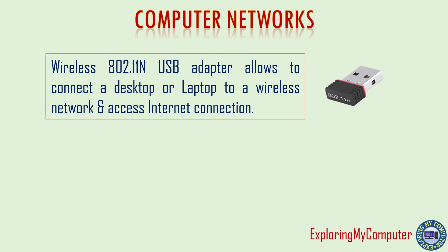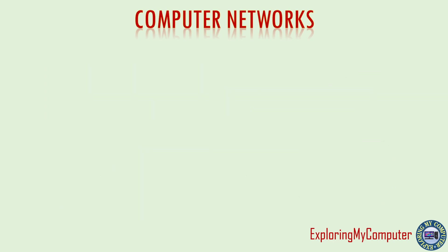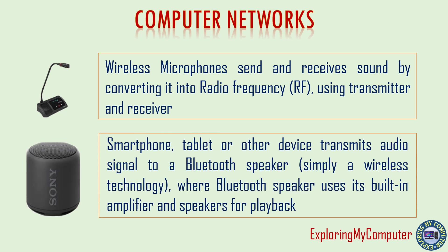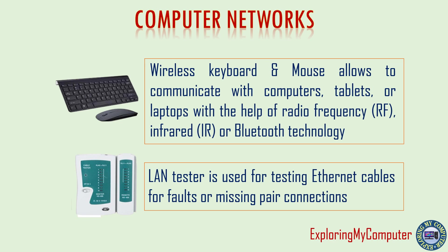Wireless 802.11n USB adapter allows connecting a desktop or laptop to a wireless network to access an internet connection. Wireless data card is a personal hotspot router used to connect up to 10 Wi-Fi-enabled devices such as smartphones, laptops, tablets, and smart TVs. Wireless microphones send and receive sound by converting it into radio frequency (RF) using a transmitter and receiver. A smartphone or tablet transmits audio signals to a Bluetooth speaker — a wireless technology where the speaker uses its built-in amplifier for playback. Wireless keyboard and mouse allow communication with computers, tablets, or laptops using radio frequency (RF), infrared (IR), or Bluetooth technology. A LAN tester is used for testing ethernet cables for faults or missing pair connections.